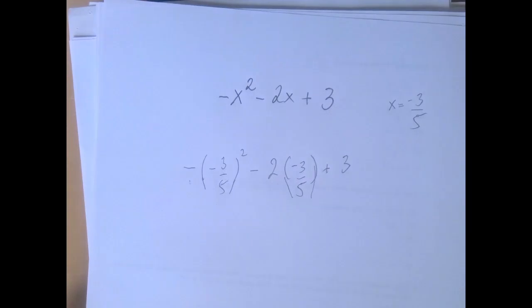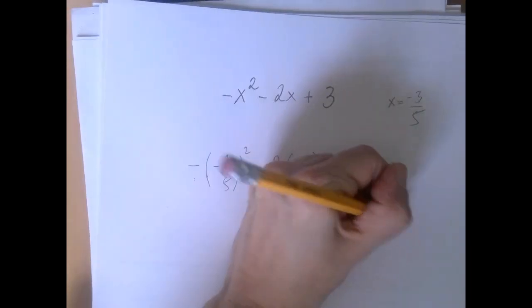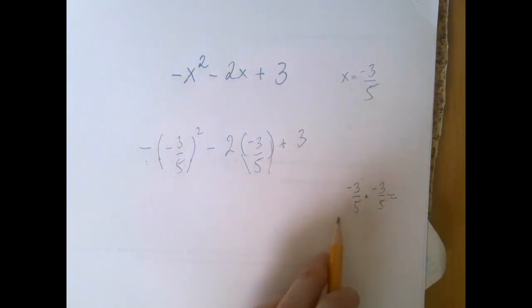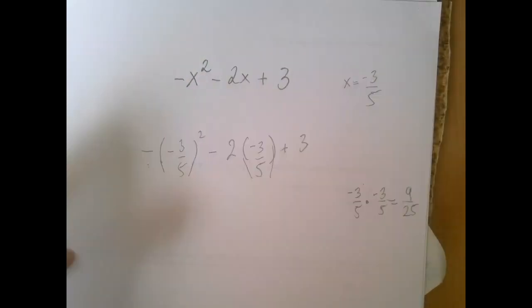So the strongest one is squaring negative 3 over 5. Negative 3 over 5 squared is negative 3 over 5 times negative 3 over 5. And top by top, bottom by bottom will give us 9 over 25.